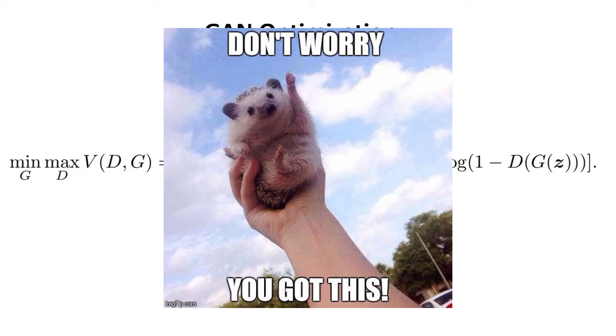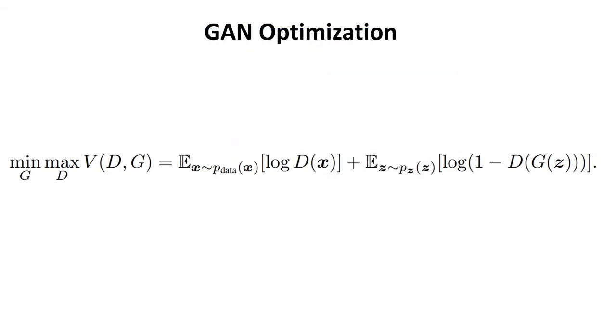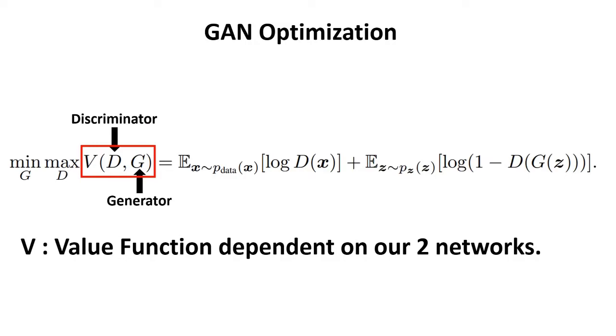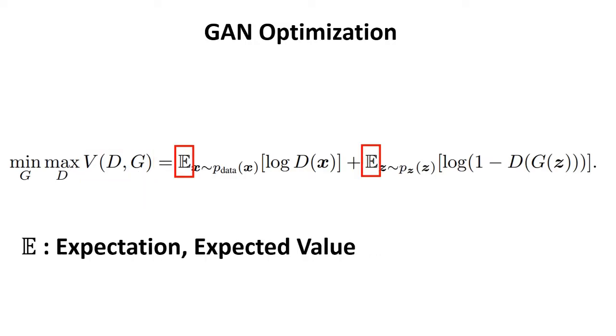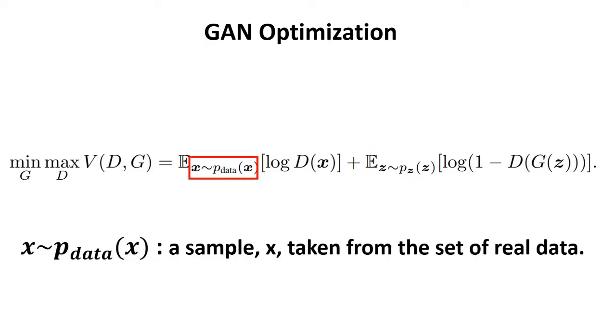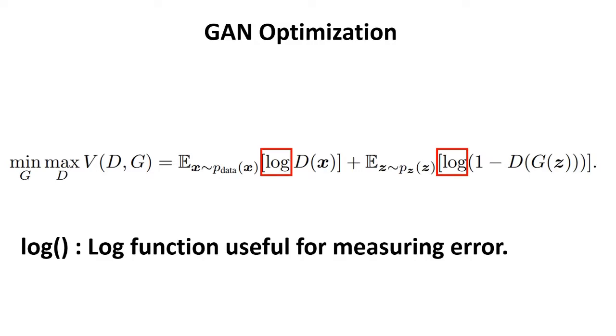First let's go over the symbols and various expressions. V is the value function dependent on our two networks. E is the expectation, just think the expected value. x of p_data means a sample x taken from the set of real data. And we also went over how the log function is a powerful way to measure error.